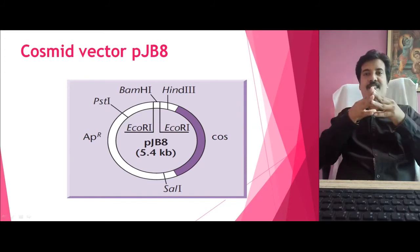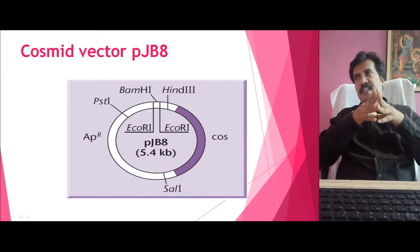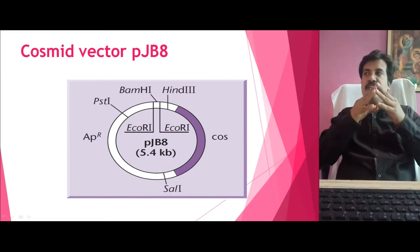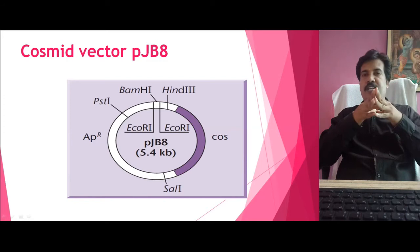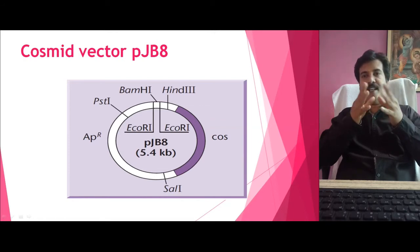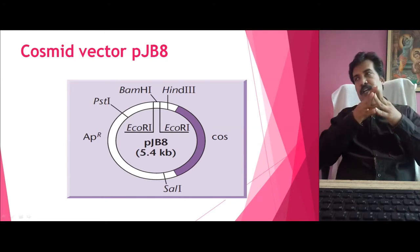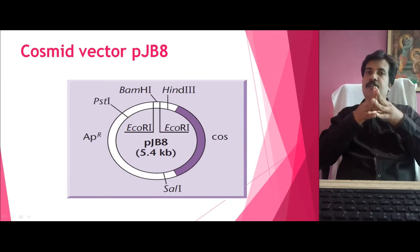Let us explain this with an example. Let us consider a Cosmid vector that is PJB8. As you can see from the figure, the PJB8 is about a size of 5.4 kilobase pairs, having two regions which have been marked: you can see the Cos region on the right-hand side, and it carries an Ampicillin resistant region used as a marker on the left-hand side. Apart from this, it carries the unique restriction sites like BamHI, HindIII, PstI, and SalI. These are the common restriction sites used for the restriction of the genomic DNA as well. Let us understand how the Cosmid PJB8 can be easily cloned and identified.